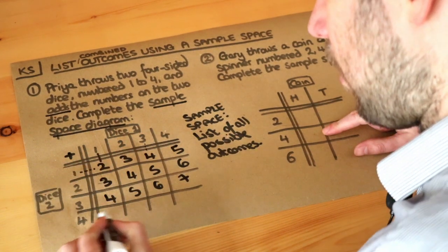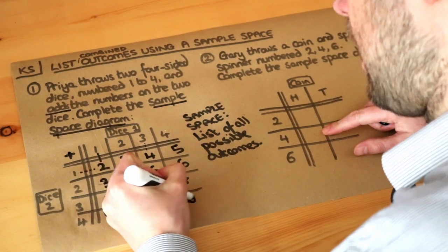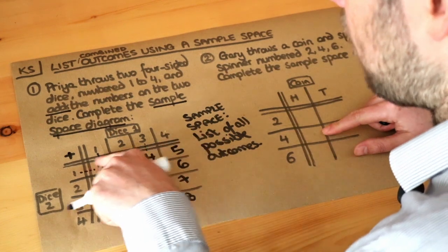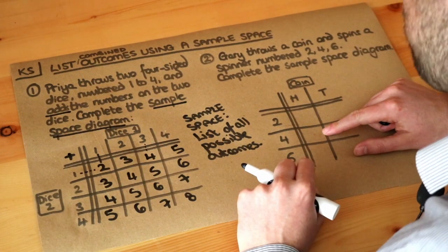And then one plus four is five, six, seven, eight. So these are all the possible combined outcomes when we add the outcomes from two different dice.